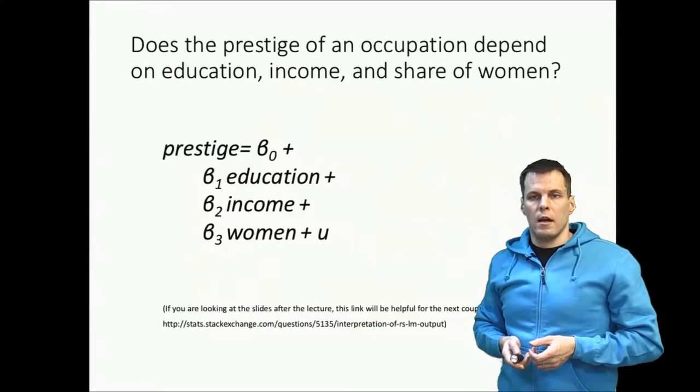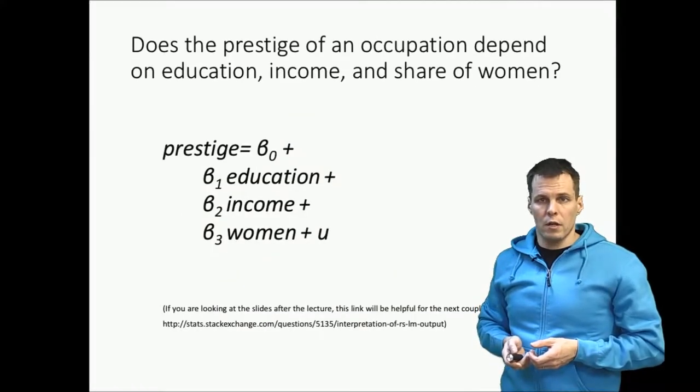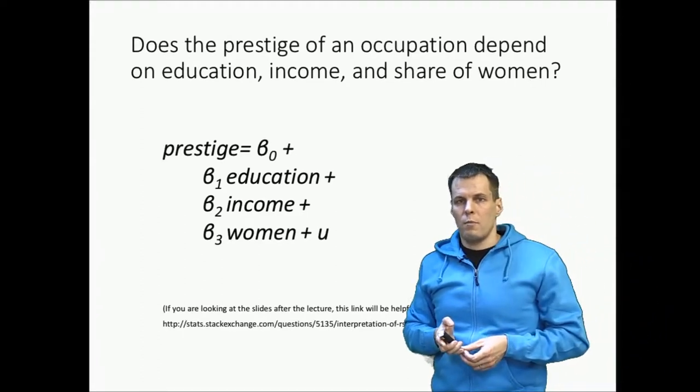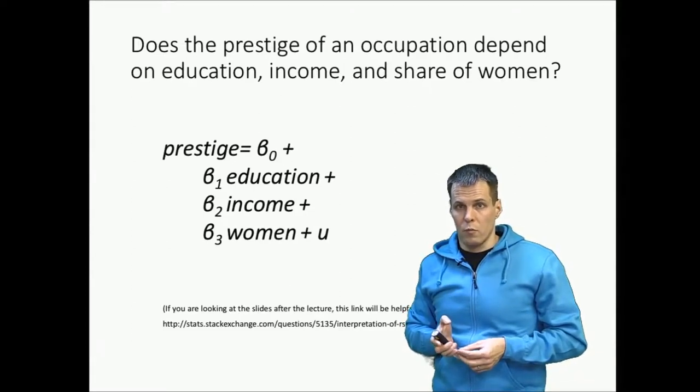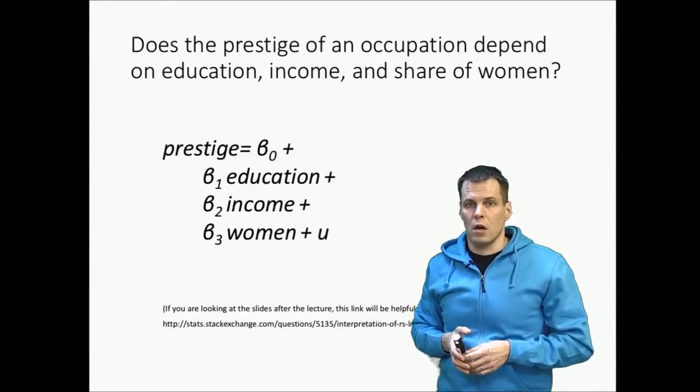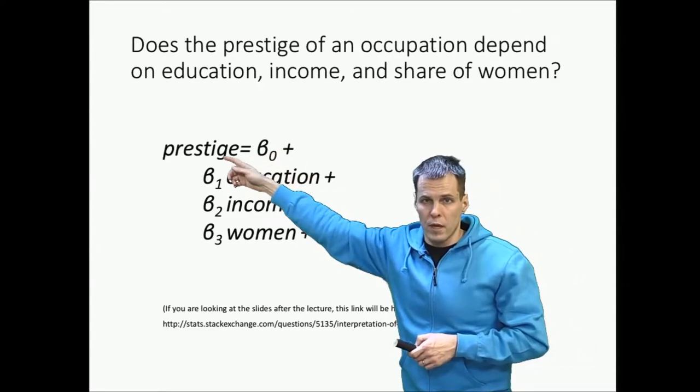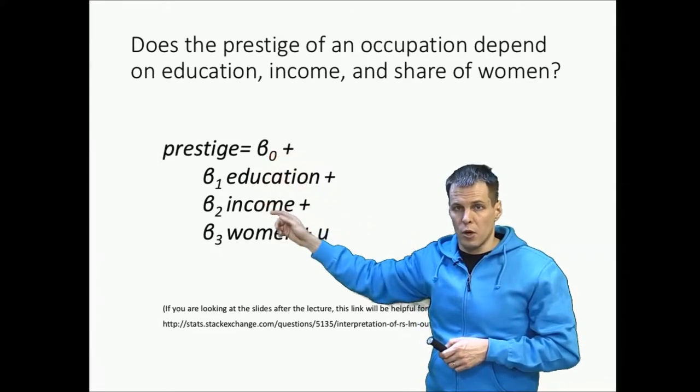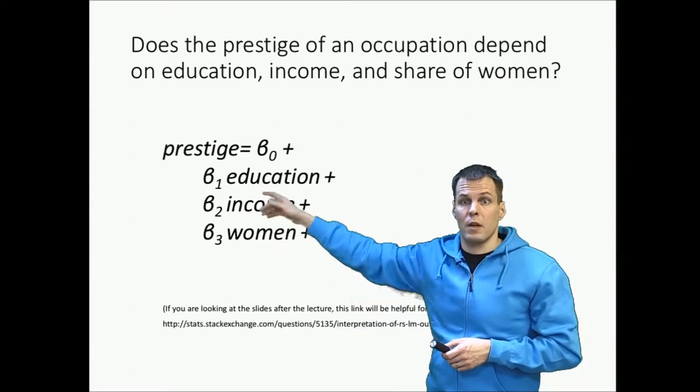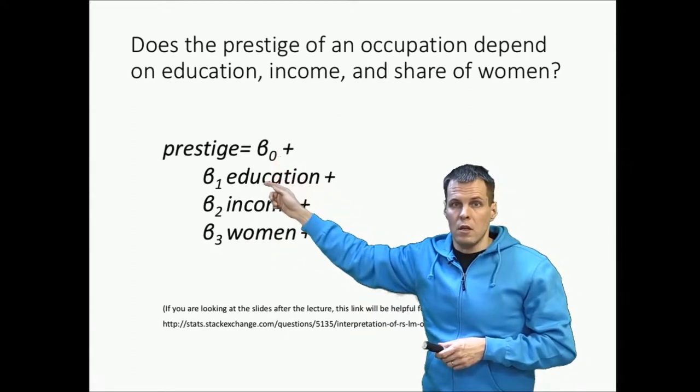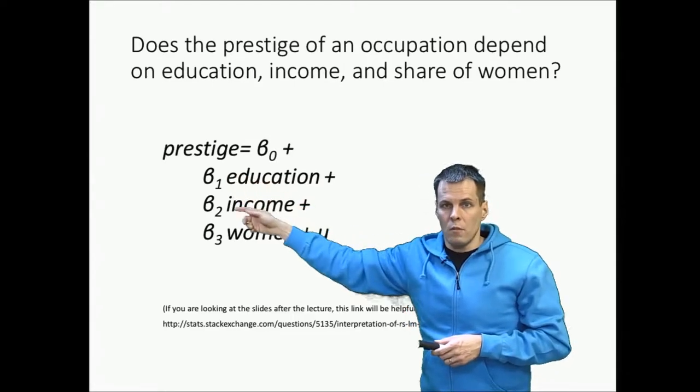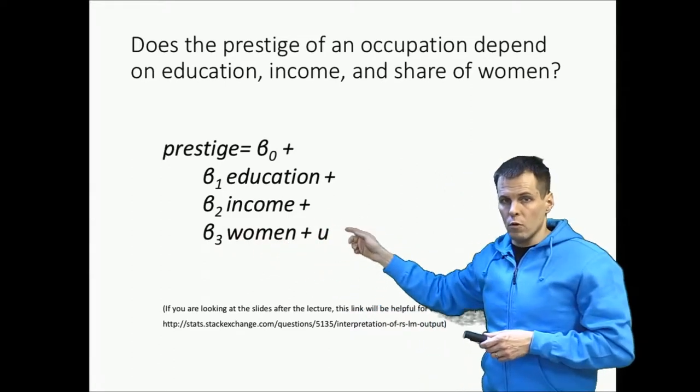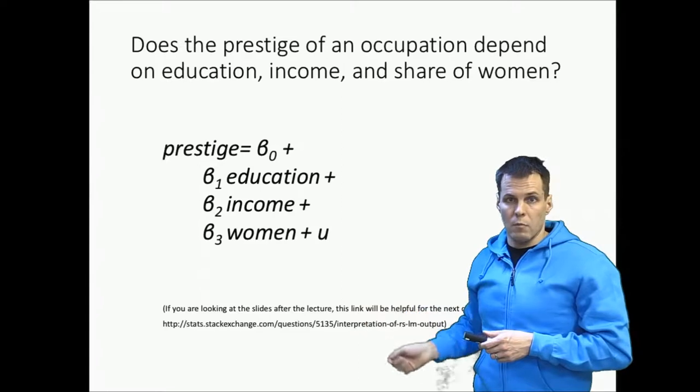Let's go to the actual regression model. To do regression analysis we need to have a research question. Our research question is: does the prestige of an occupation depend on education, income, and share of women in the occupation? Expressed as a regression model, we say that the prestige of an occupation is a function of beta zero, which is some base level when education, income, and share of women is zero. Beta 1 is the effect of education, beta 2 is the effect of income, beta 3 is the effect of women, and then there is the error term U that represents some variation in the data that the model doesn't explain.